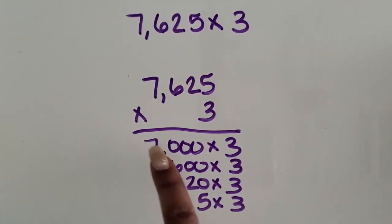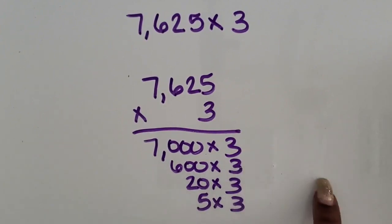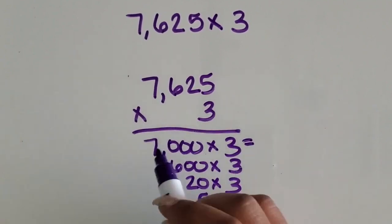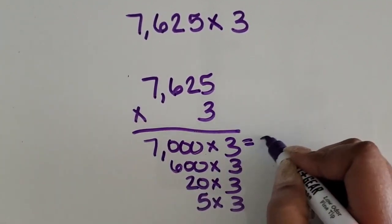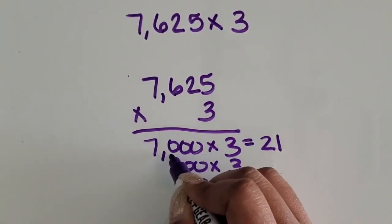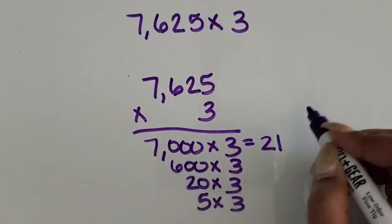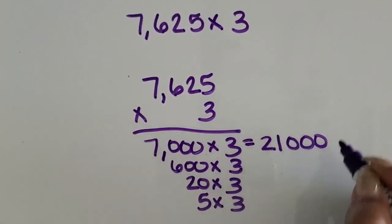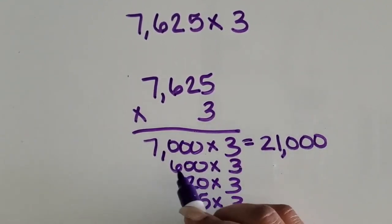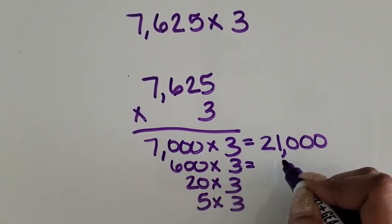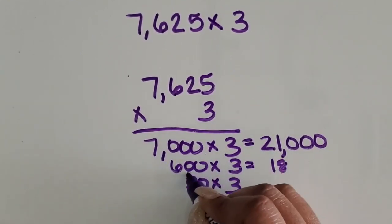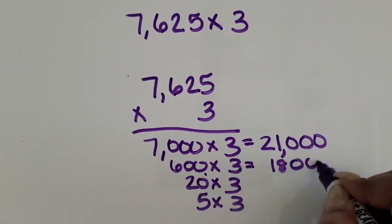Then next, you want students to write the products out for each of these separate expressions. Seven times three is 21, then 1,000 times greater than that is 21,000. Six times three is 18, and then 100 times greater than that is 1,800.